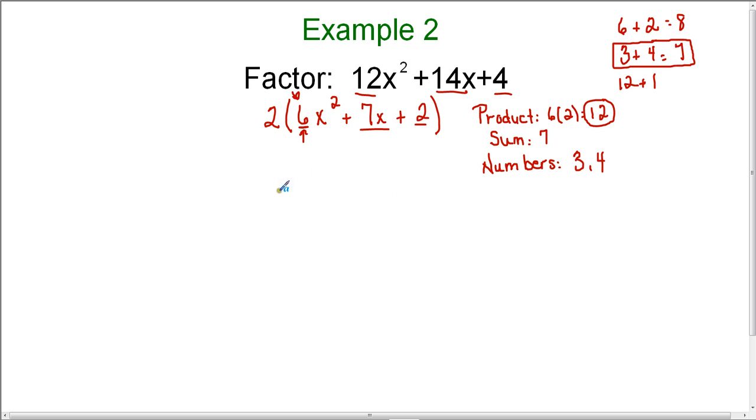Now I'm going to take this trinomial. I'll bring down the first term exactly the same, but I'm going to replace this middle term with 3x + 4x. 3x + 4x is still 7x, so I haven't changed the value of the trinomial. I'm just rewriting it in a different way.